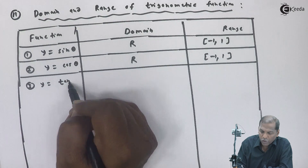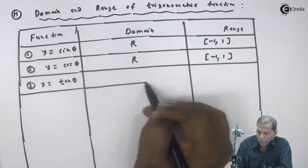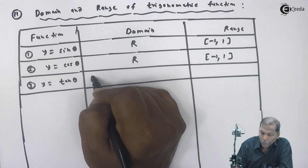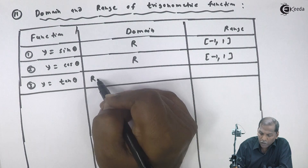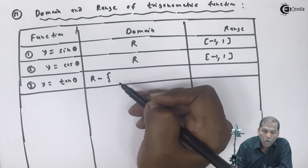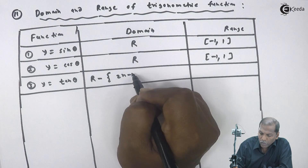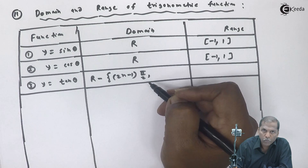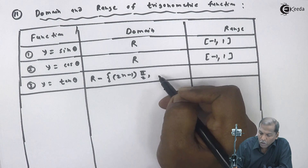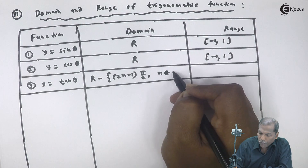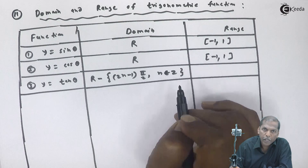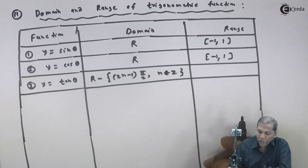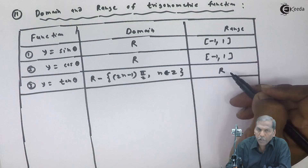The third function is y equal to tan theta. For tan theta, the domain is the set of real numbers excluding odd multiples of pi by 2, that is R minus {(2n minus 1) pi by 2}, where n belongs to the set of integers Z. The range of tan theta is the set of all real numbers.